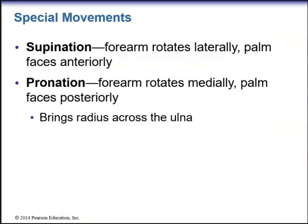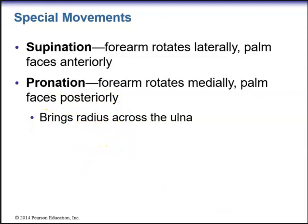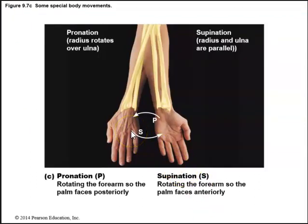Supination is when the forearm rotates laterally and the palm faces anteriorly — palms facing up. Notice the word 'up' in supination. Pronation rotates the forearm medially so the palm faces posteriorly, with the radius crossing over the ulna.